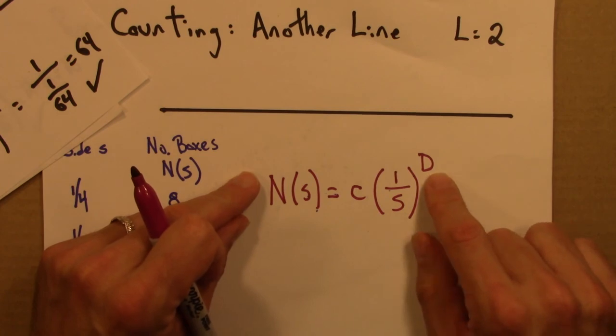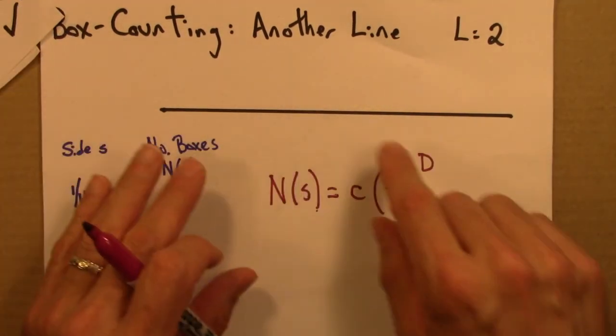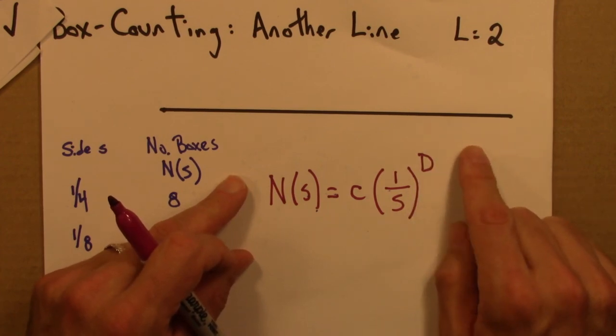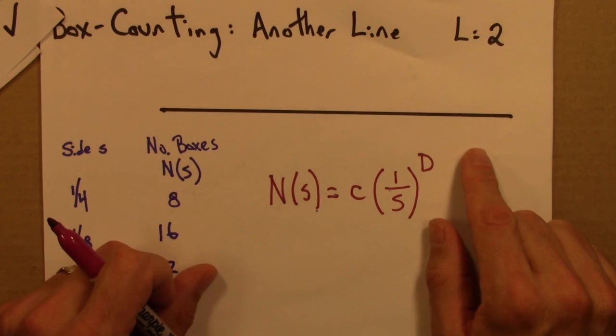And what I want to do next is calculate this dimension d not for a line or a square, but for the Sierpinski triangle. So that's what we'll do in the next video. Thank you.